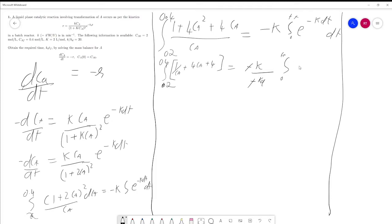The integration you get is from Ca zero to Ca final. You just have to bring the minus K DT. Now what you'll be doing is solving for this one.